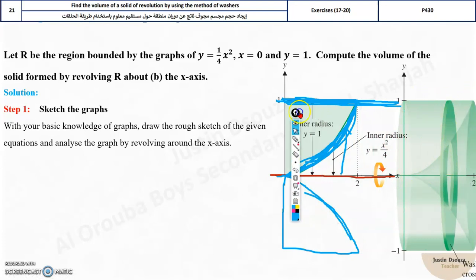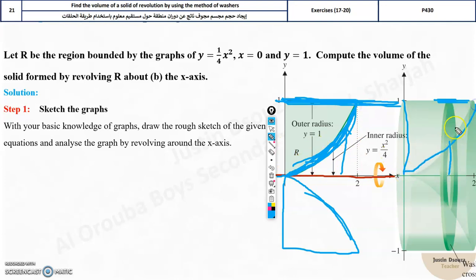So what we do is, by the method of washer, outermost length. What is the outermost length from here to here? It is 1. Why? Because it is given, right? This is the distance. 1. And then, what is the inner radius? Inner radius is varying because it is a curve. And this is the inner radius. So it varies.